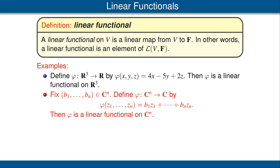Our second example is on Cⁿ. Fix a vector (b₁, ..., bₙ) in Cⁿ and define phi from Cⁿ to C by phi of (z₁, ..., zₙ) equals b₁z₁ plus ... plus bₙzₙ. Then phi is a linear functional on Cⁿ. Again, we are mapping into the scalar field C.